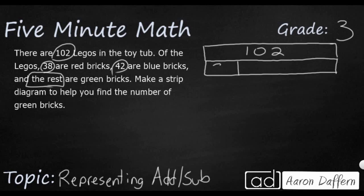We know one part is 38. We know another part is 42. And then question mark, that's going to be my green brick. So if I take my 38 and I add that to my 42, and I add that to, I'm going to put my box here. That's my question mark. That's going to make 102.